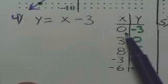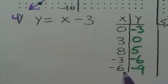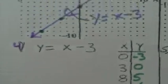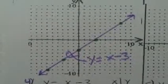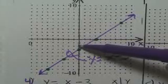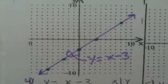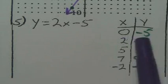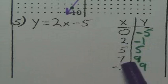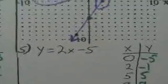Going down to number 4, you should have the points (0, negative 3), (3, 0), (8, 5), (negative 3, negative 6), and (negative 6, negative 9). And the graph should look like this. You could check to see if you did it right — going to negative 3 and positive 3 on the x-axis. On number 5, you should have (0, negative 5), (2, negative 1), (5, 5), (7, 9), and (negative 2, negative 9). And if you graph those solutions, it should look like this.